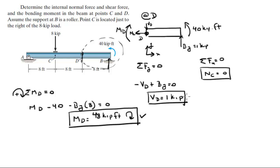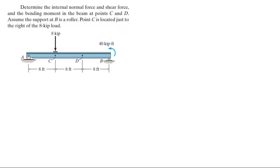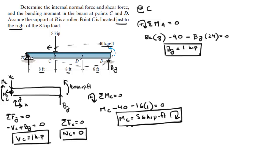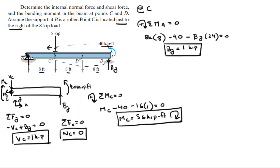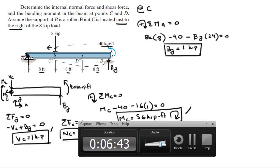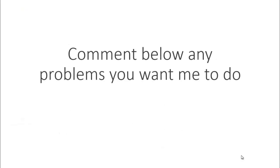So the final answers: at D, the shear is 1 kip, normal is 0, and moment is 48 kip-feet. At C, the shear is 1 kip, normal is 0, and moment is 56 kip-feet. Please comment below if you want me to do any problems and I'll be happy to help — thank you.